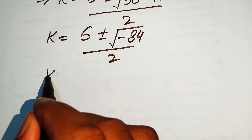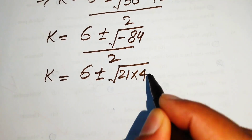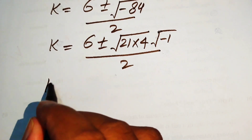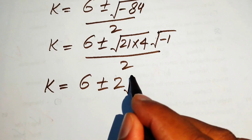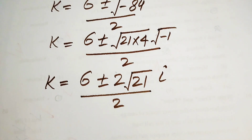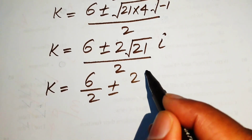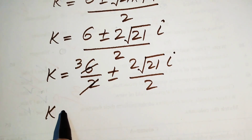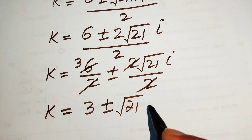We rewrite minus 84 as minus 1 times 4 times 21. The square root of 4 is 2, and the square root of minus 1 is iota (i). So k equals 6 ± 2√21 · i, divided by 2. Breaking the fraction: 6/2 ± (2√21 · i)/2 gives k equals 3 ± √21 · i.